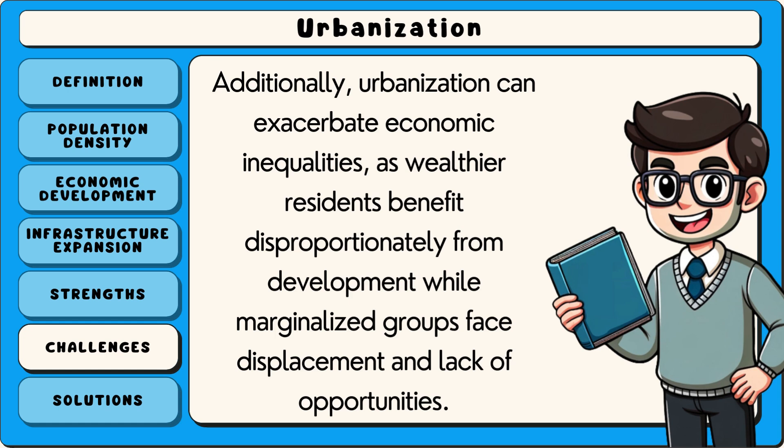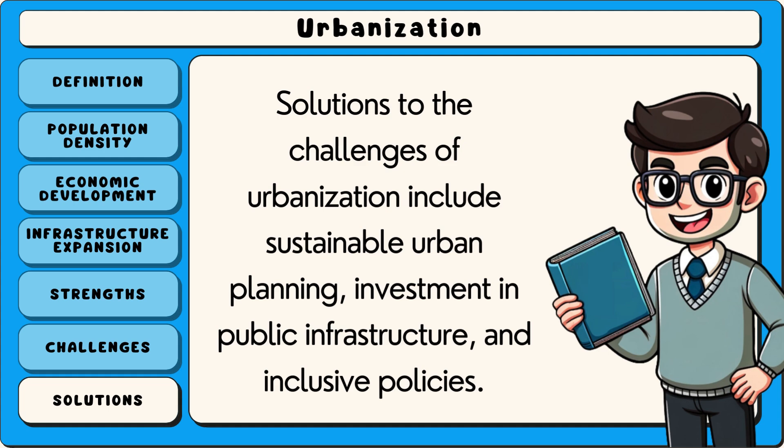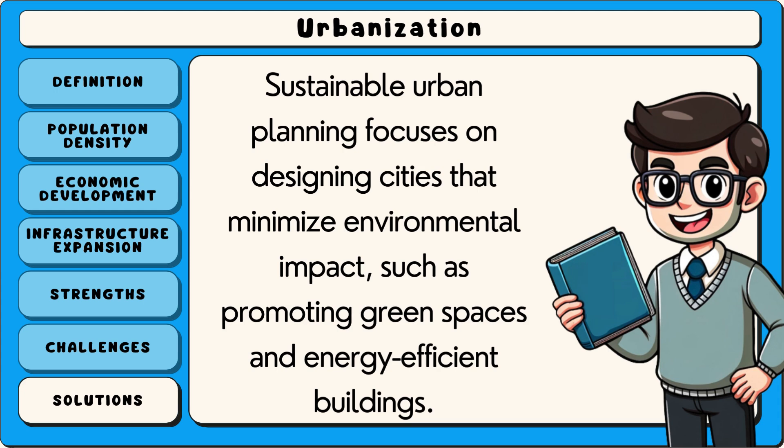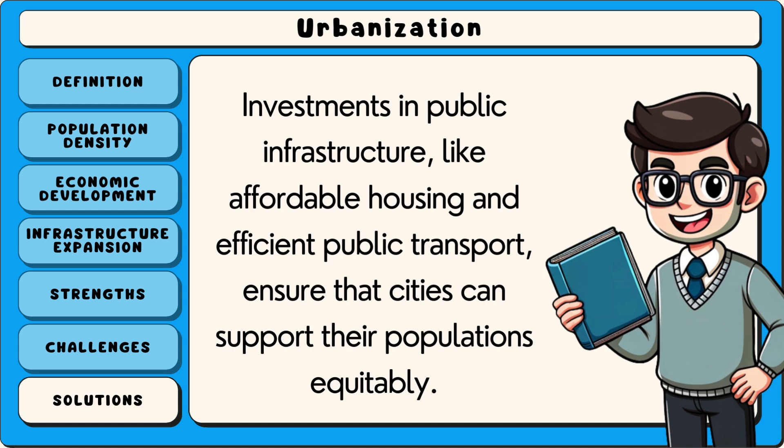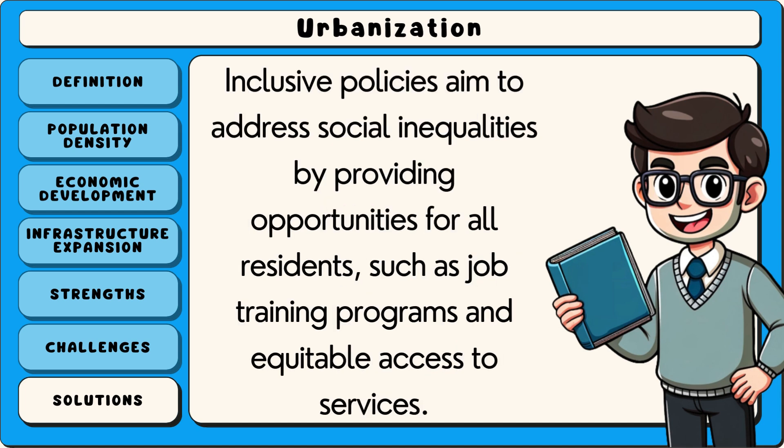Solutions to the challenges of urbanisation include sustainable urban planning, investment in public infrastructure and inclusive policies. Sustainable urban planning focuses on designing cities that minimise environmental impact, such as promoting green spaces and energy efficient buildings. Investments in public infrastructure, like affordable housing and efficient public transport, ensure that cities can support their populations equitably. Inclusive policies aim to address social inequalities by providing opportunities for all residents, such as job training programmes and equitable access to services.